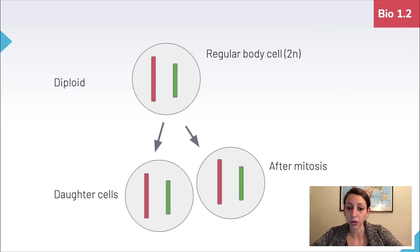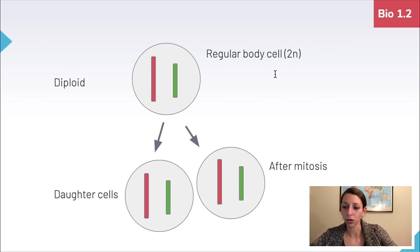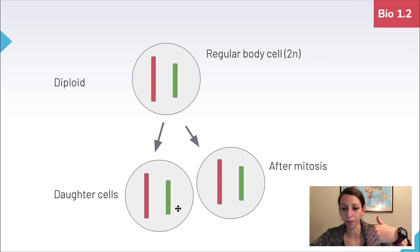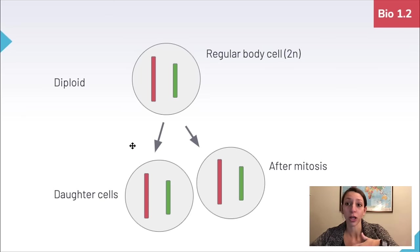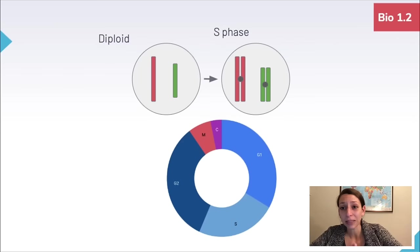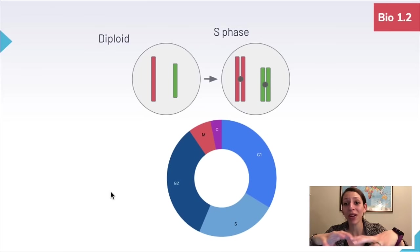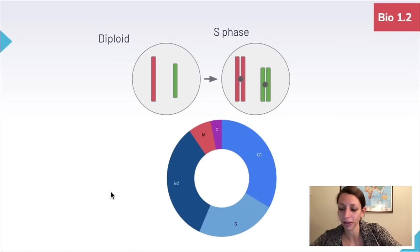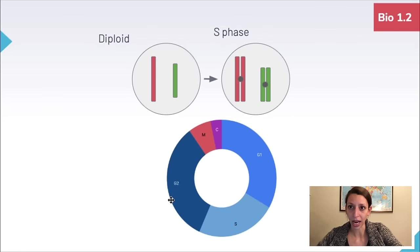A few important things to remember about mitosis: a regular body cell goes from a diploid cell (2n) to two diploid daughter cells with identical genetic information as the parent cell. The goal is to make two identical daughters. The DNA must be duplicated during S phase of interphase before mitosis can occur — otherwise splitting without duplication would give daughter cells only half the DNA, which is what happens in meiosis, not mitosis.